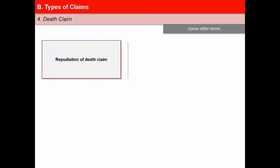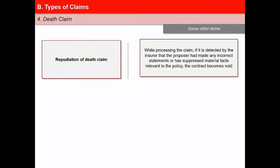Repudiation of death claim: the death claim may be paid or repudiated. While processing the claim, if it is detected by the insurer that the proposer has made any incorrect statements or has suppressed material facts relevant to the policy, the contract becomes void and all benefits under the policy are forfeited.